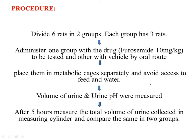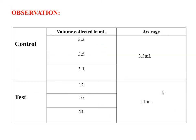We will place the animals in a metabolic cage separately to avoid interference. We will measure the volume of urine and urinary pH. After placing the animals, we have to wait for 5 hours to allow urine collection. After 5 hours, we will measure the total volume of urine collected in the measuring cylinder and compare the results between the two groups.